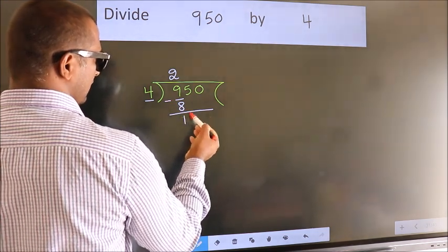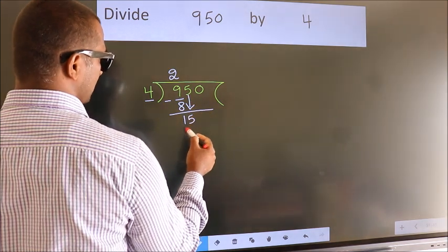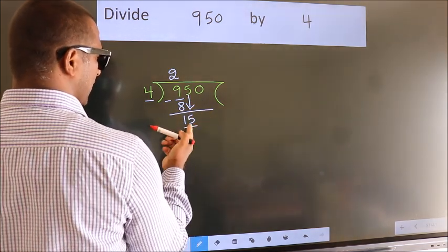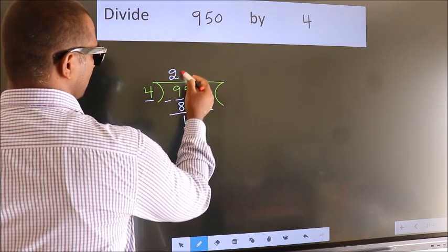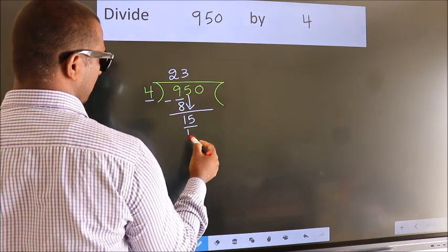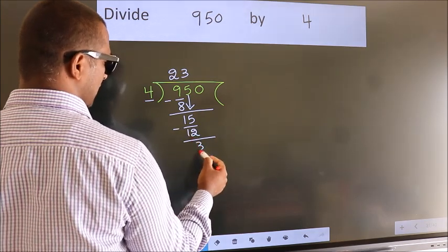After this, bring down the beside number. So, 5 down, giving us 15. A number close to 15 in the 4 table is 4 times 3 equals 12. Now, we subtract. We get 3.